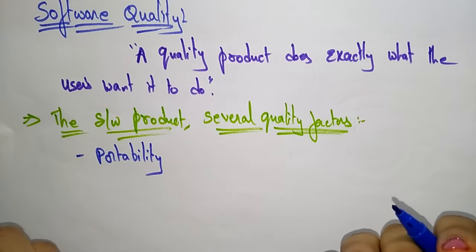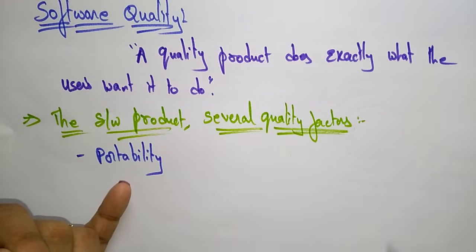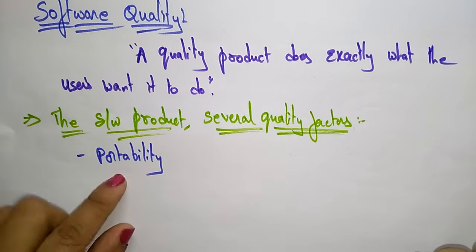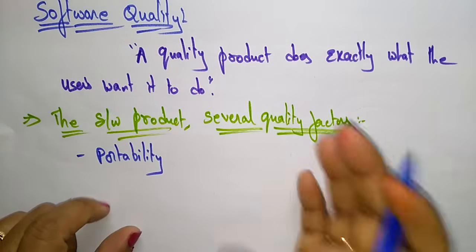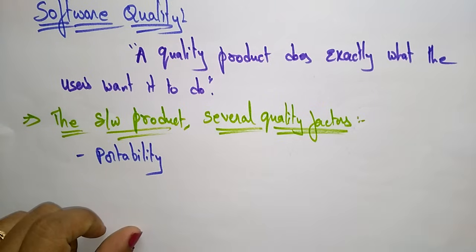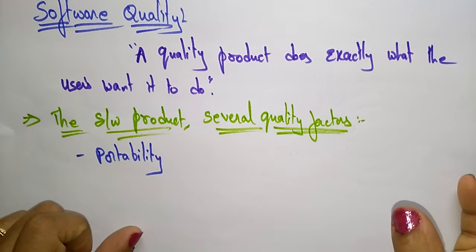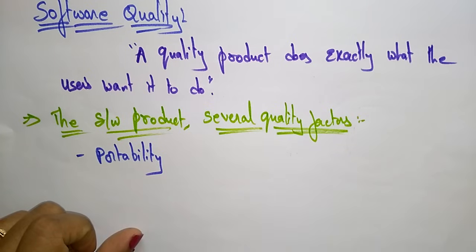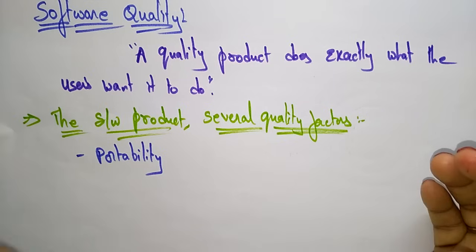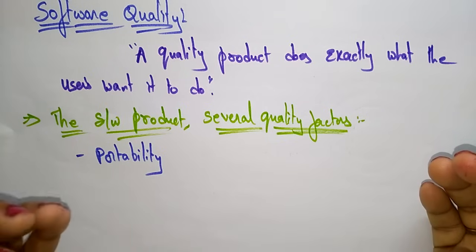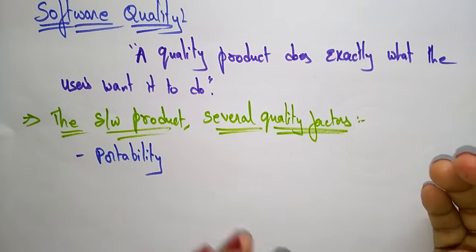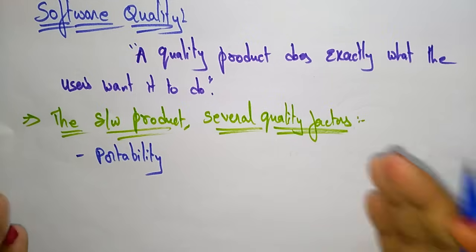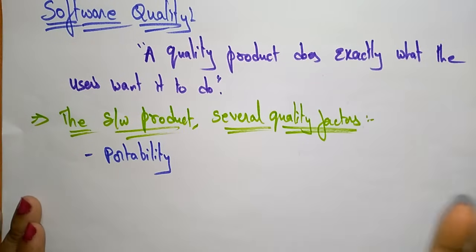Portability means it is platform independent — the software has to work in different operating systems. Whatever operating system is there on your system, your product is going to work on that operating system. It should also be supported on different machines and different apps. The ability to be used in any environment — that is portability. So the first quality factor is portability.